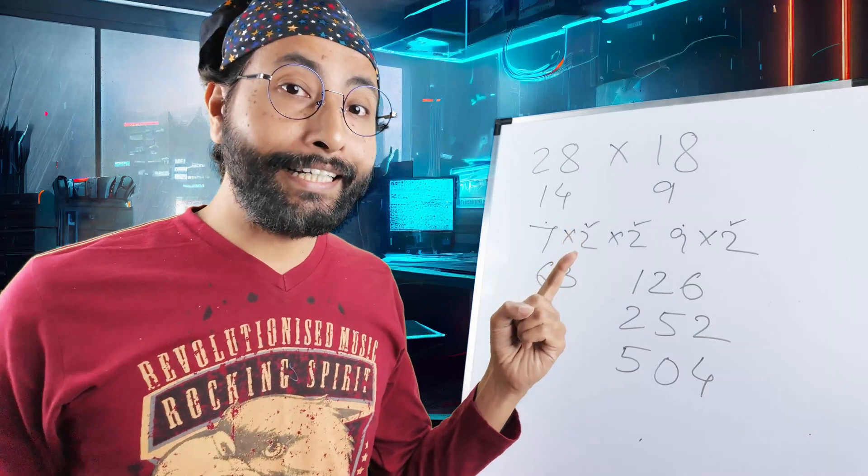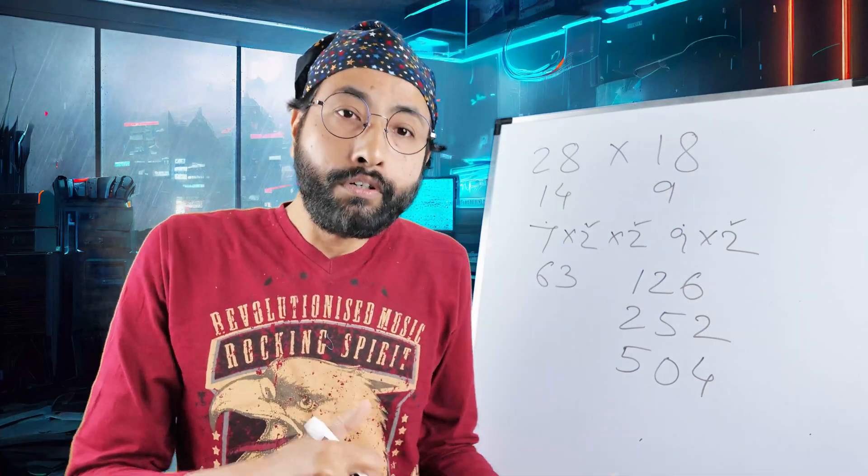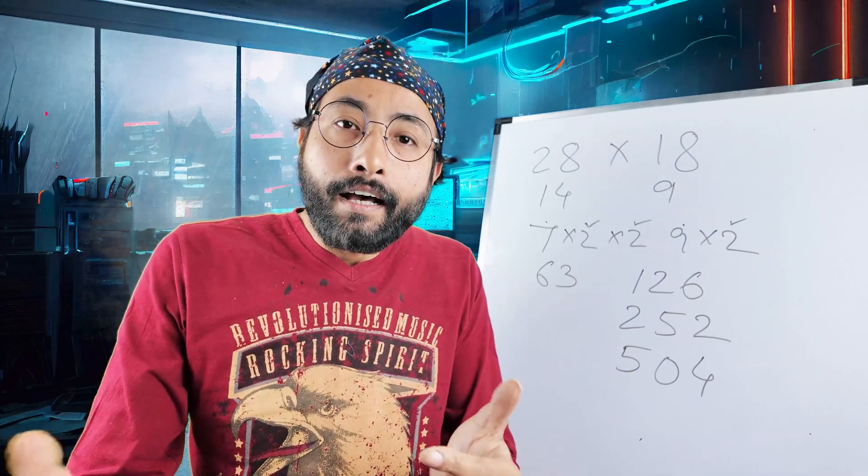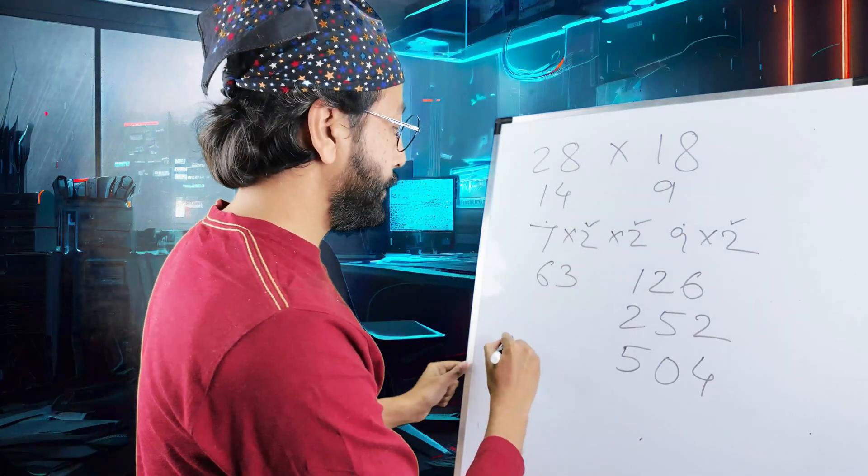Last but not least, initially I said 90 nineteens are. How to do that? Tell me, 20 twenties is 400. Now, remove 20. So, it will be 380. Simple? Now, remove 19. 380 minus 20 is 360. Add 1, 361. 361 is your answer.